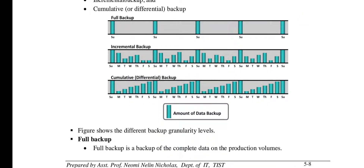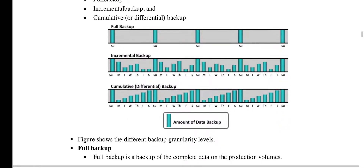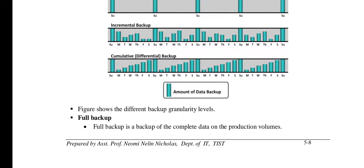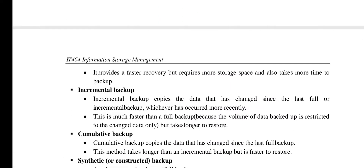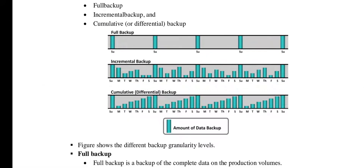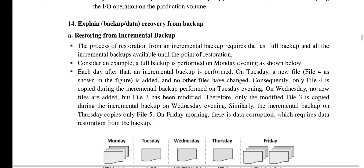A full backup is a backup of the complete data, occurring at defined intervals. An incremental backup copies the data that has changed since the last full or incremental backup, whichever occurred more recently. A cumulative backup copies the data that has changed since the last full backup. From question 14 onwards, these topics will be discussed in Part 2.